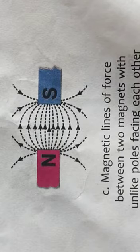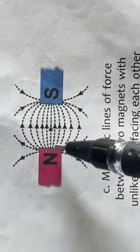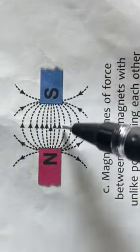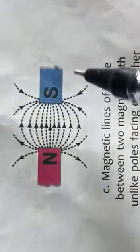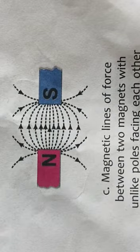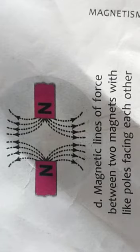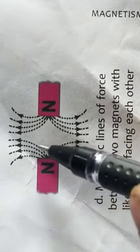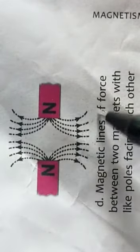If two magnets are brought near each other with their unlike poles facing each other, the magnetic field lines start from the north and move toward the south. If two magnets with their like poles facing each other are brought near, the magnetic lines of force repel each other — north pole facing north pole, they repel.